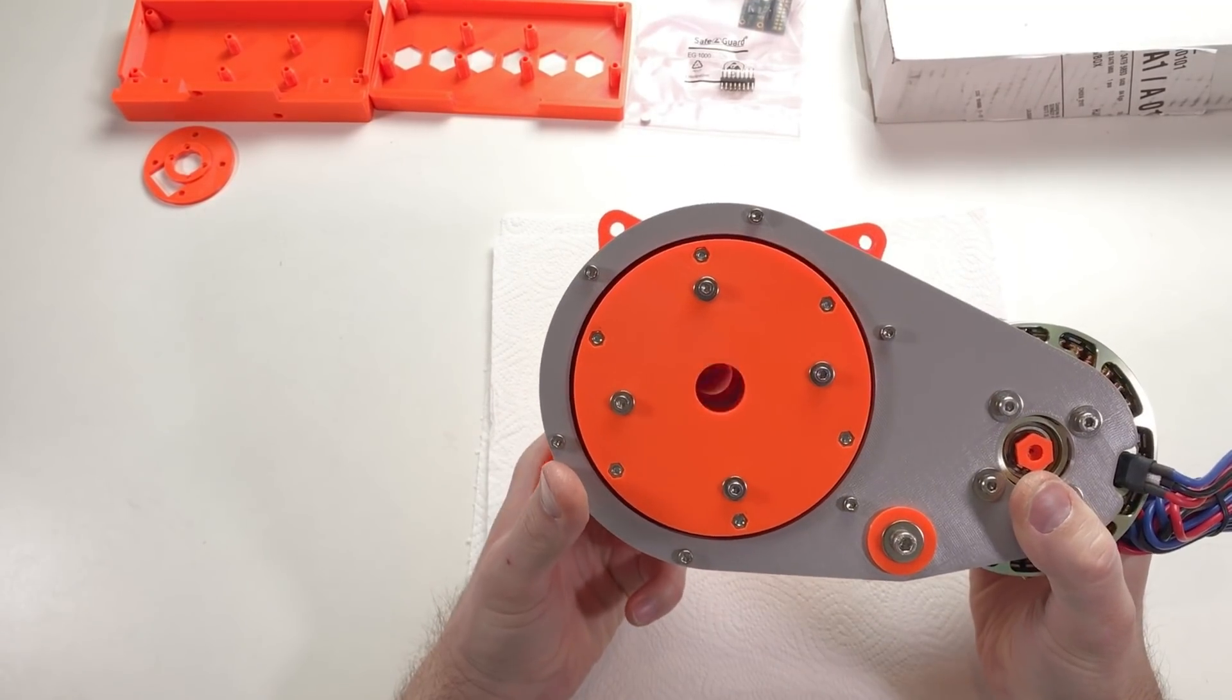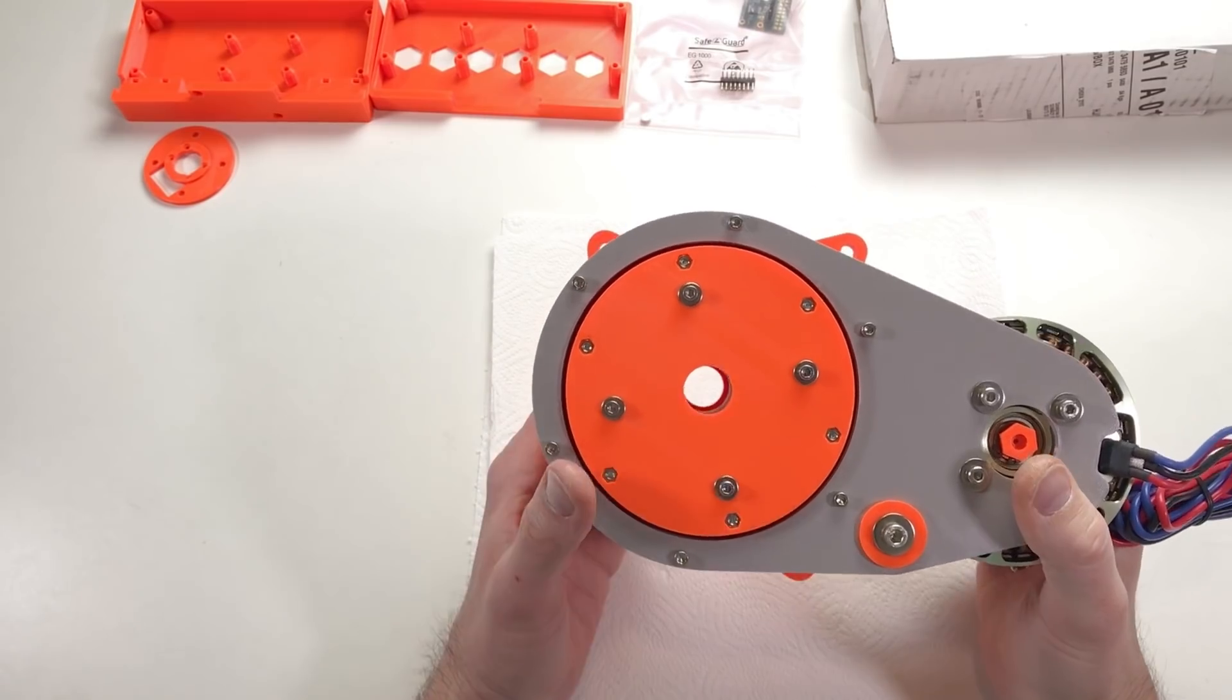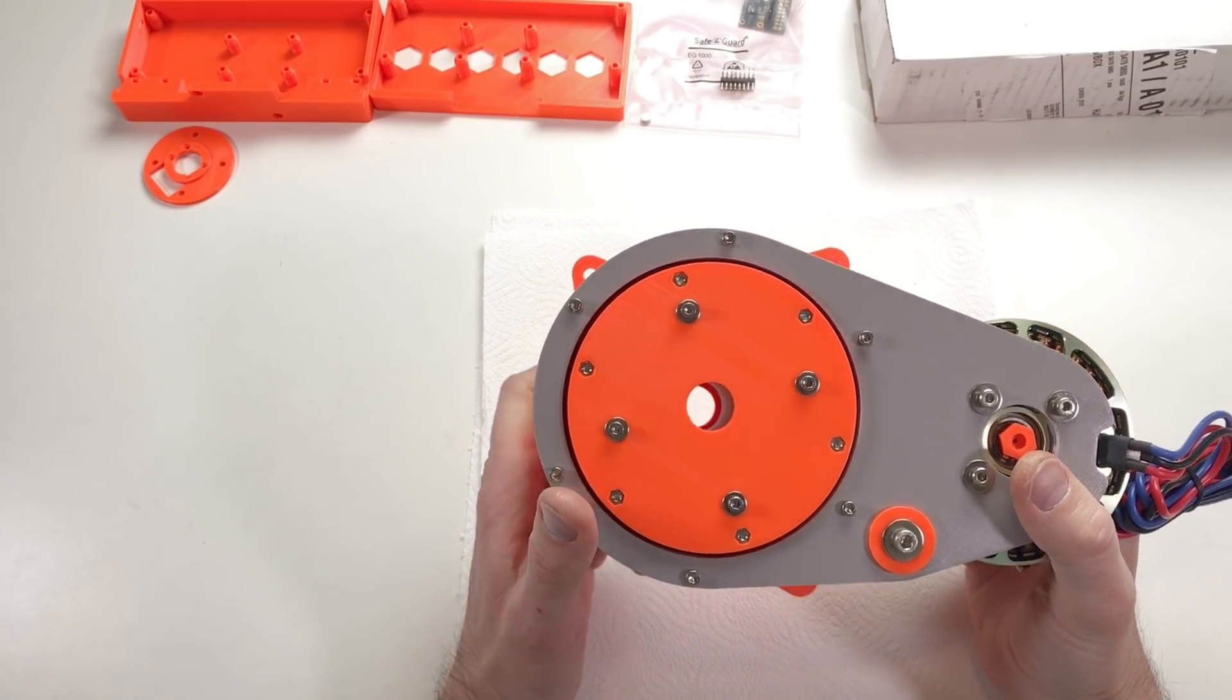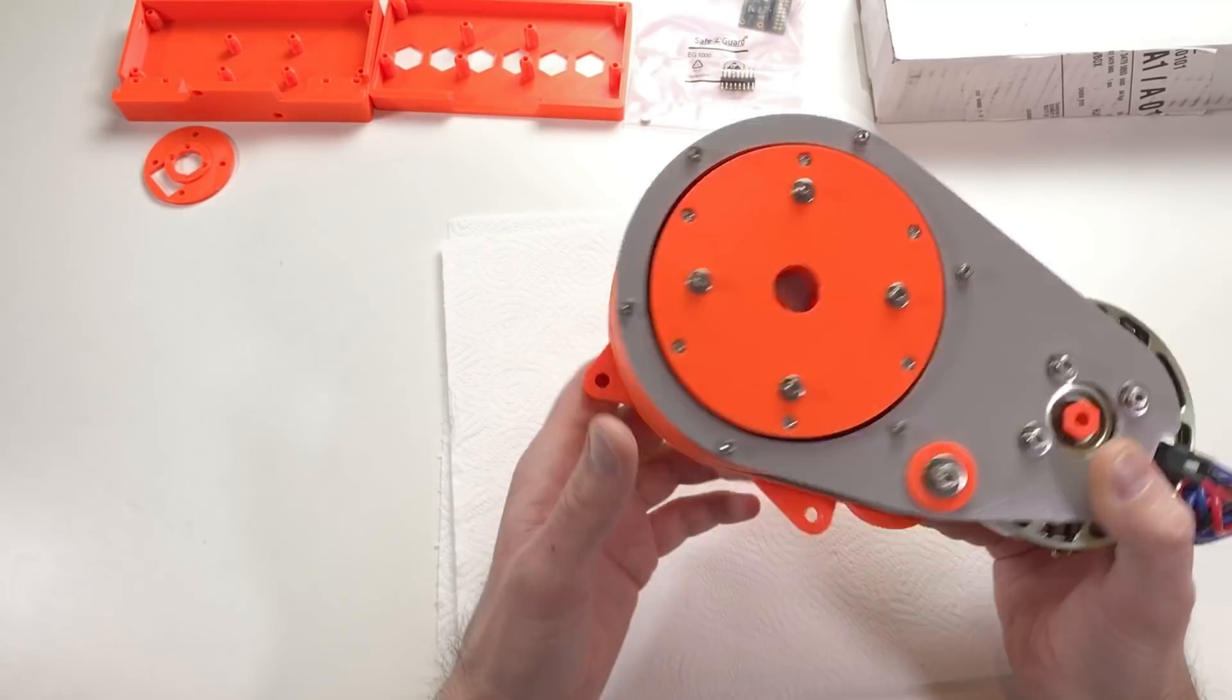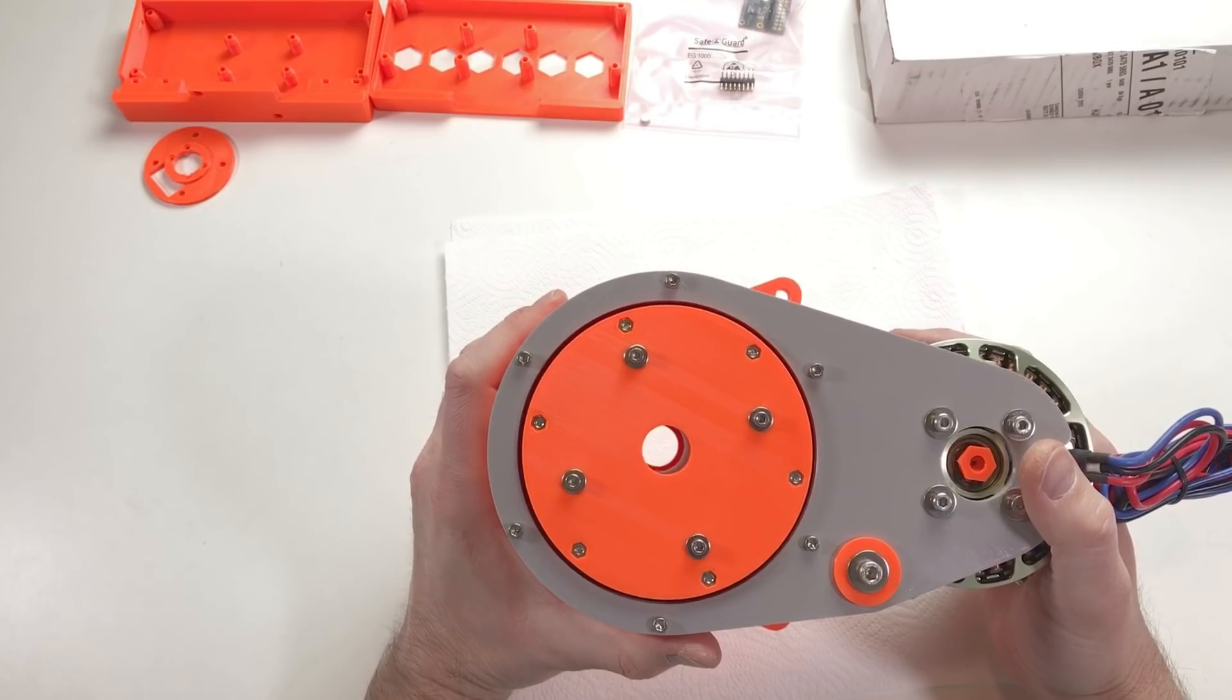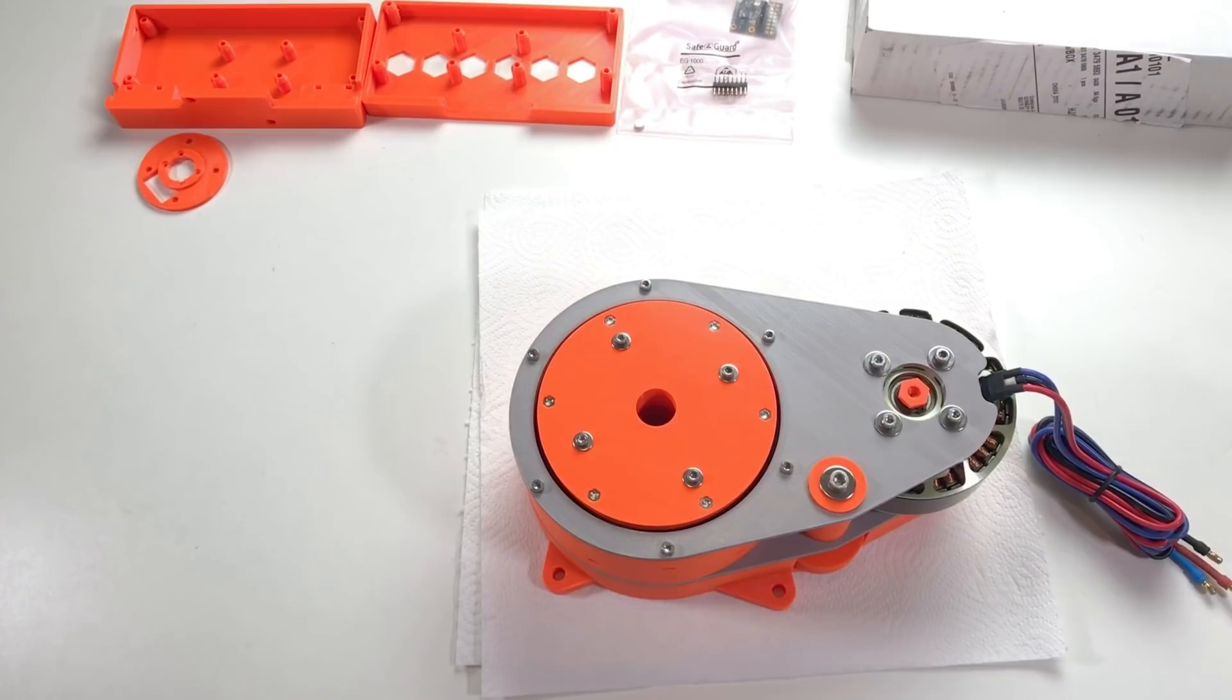And in the middle of this actuator there is this hole. This one. So we can use it to pass the cables. So like this all the cables from the robot arm will go through this hole and will come out through this one. This should be very convenient.